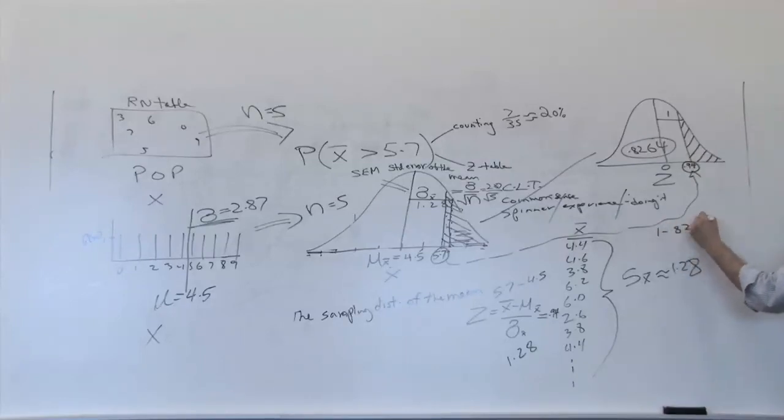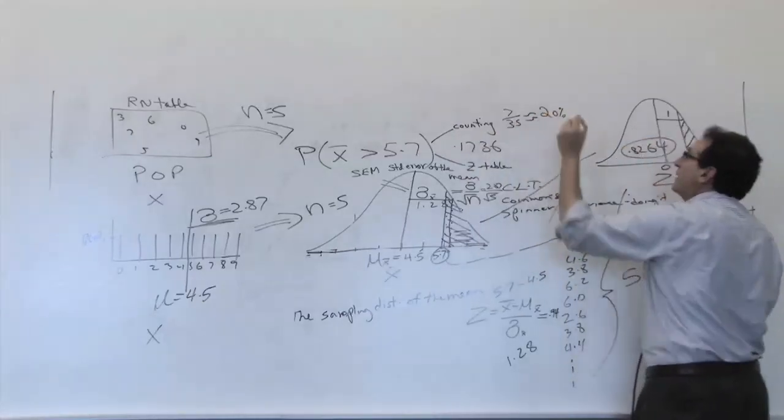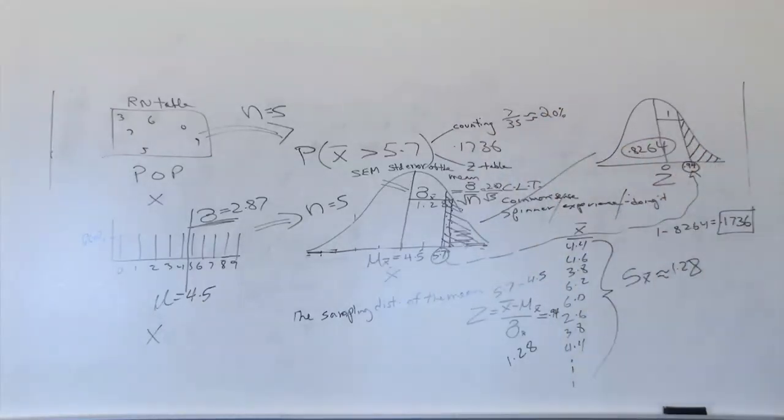1 minus 0.8264, which, if I can do this in my head, is 0.1736. Am I right about that? Okay. So the final answer, after all is said and done, is 0.1736, which is not that far from Nakia's original experience, or limited experience. If you understand this, you understand all of Chapter 7, which is literally half of the third test.